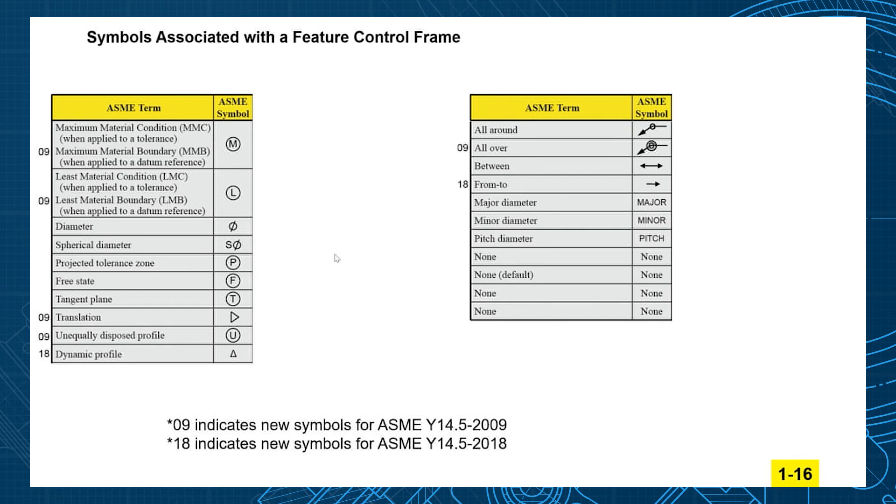In the book I have a chart that shows all the symbols that could be associated with a feature control frame, either found inside or around. Some of them you'll see quite a bit. MMC will be a common one. Diameter symbols are common. Then there's more obscure symbology you don't see as often, like spherical diameter and tangent plane. We'll talk about more of these later in the program at their appropriate times.